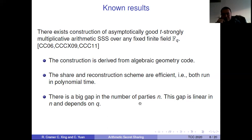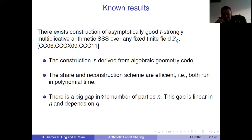Also, there is a big gap in the number of parties. Why do we have this gap? Because the secret sharing scheme is asymptotically good, which means we have a family of secret sharing schemes as N goes to infinity. Between each adjacent secret sharing scheme in the family, there is a jump on the number of parties, and this jump is linear in N. Sometimes the jump is very big due to algebraic geometry codes, and this big gap causes a loss of performance in terms of privacy and reconstruction.